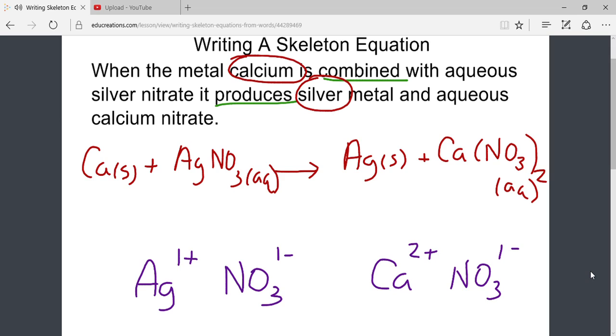The skeleton equation is now written in red. The information in purple that is being erased is simply the charges of the ions that help us write the formulas for the products.